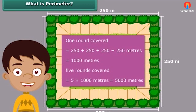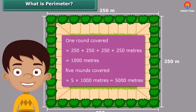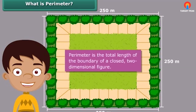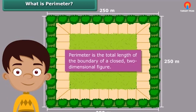Now you are ready to answer your mother's question. In this calculation, we used the concept of perimeter when we worked out the distance you covered in one round. Perimeter is the total length of the boundary of a closed two-dimensional figure.